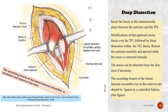Deep dissection: incise the fascia in the intermuscular plane between the sartorius and the tensor fascia latae. A modification of this approach is to incise the fascia over the tensor fascia latae followed by blunt dissection within it. Retract the sartorius medially and upward while the tensor is retracted laterally. The tensor can be detached from the iliac crest if necessary. The ascending branch of the lateral femoral circumflex artery lies in this interval and should be ligated in a controlled fashion.